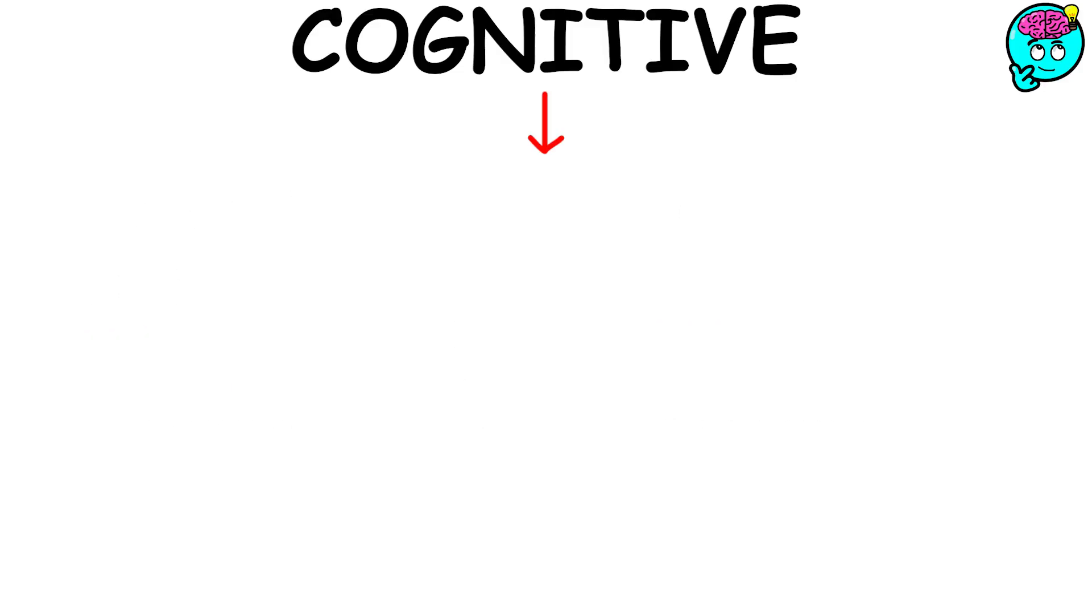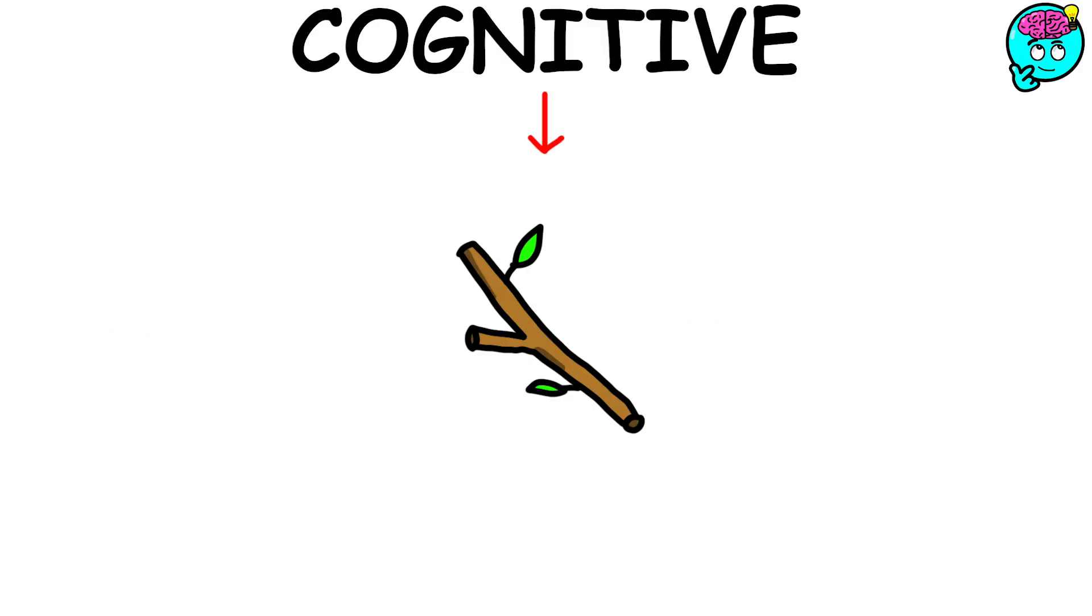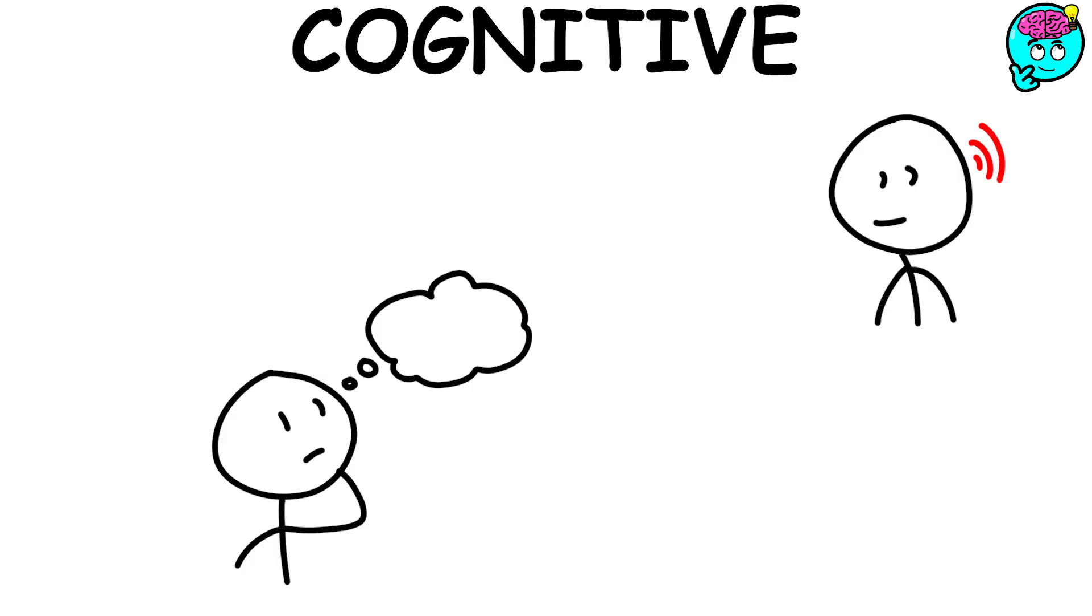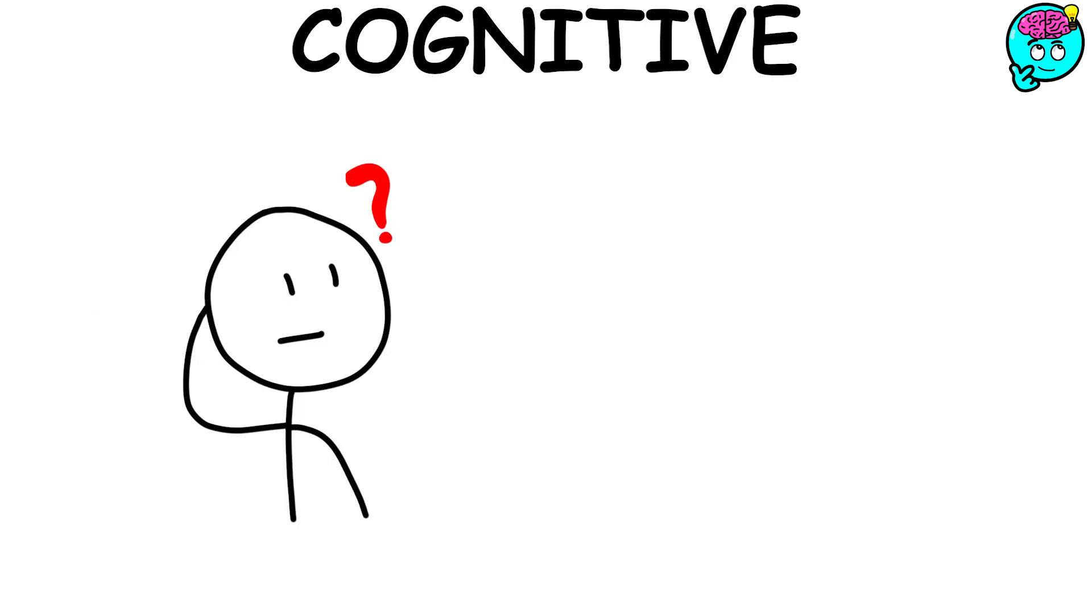Cognitive psychology. Cognitive psychology is a branch of psychology concerned with looking at mental processes that underlie behavior, including thinking, perception, problem solving, decision making, memory, and attention.